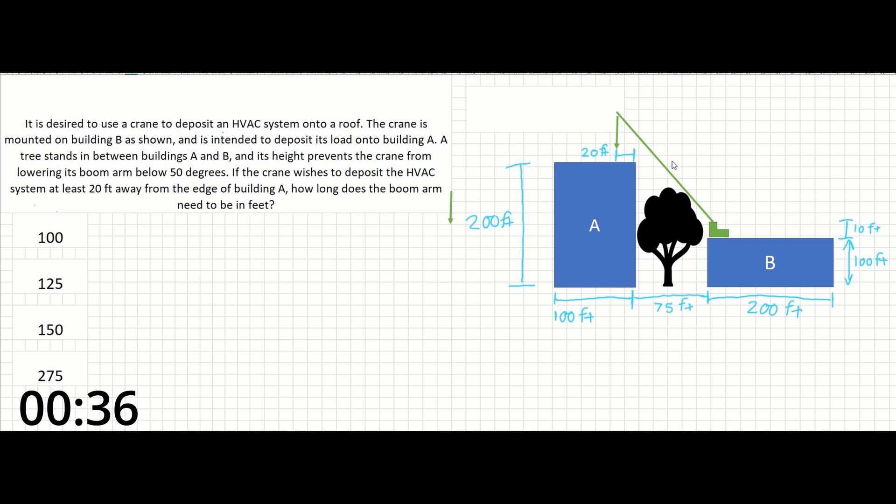So this problem is all geometry. We are looking for the length of the boom arm here, and given the other information we have in blue, we can solve for that pretty quickly. The problem also notes that the boom arm is restricted to being lowered to 50 degrees at most. So if we were to draw this out, this could be our conceptual step one.